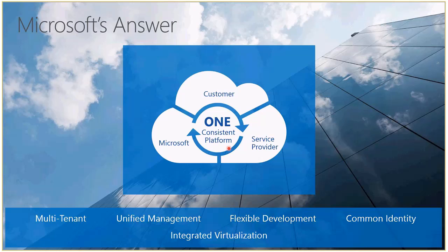The next element is flexible development. If you have a customer that develops applications — or an ISV with developers using Visual Studio or a third-party development environment — through the Cloud OS those developers are able to deploy applications directly on-premises, directly in Windows Azure, or directly to your data center. This is enabled through the integration of a common API, which is basically the key to this consistent platform. Unified management is also a great benefit, because customers can continue using System Center to manage services running in Windows Azure as well as in your data center.